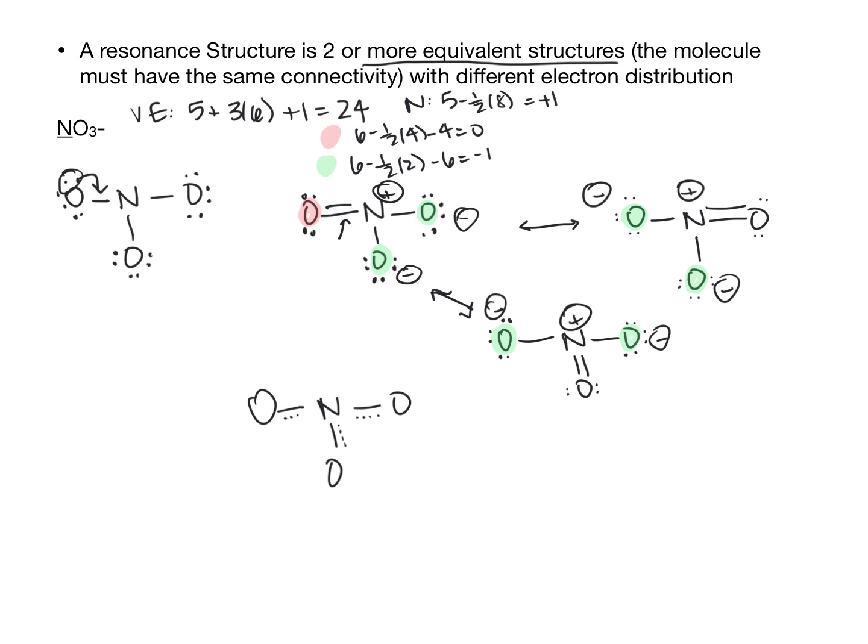This delocalization basically means the charge is spread out. In this case, all three oxygens are slightly negative, but none of them have a fully negative charge. We can use both resonance and formal charge together to think about how these structures work.